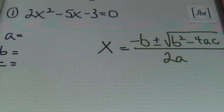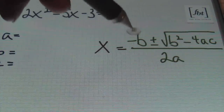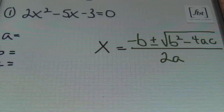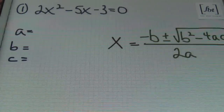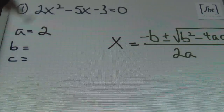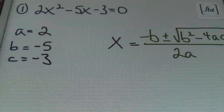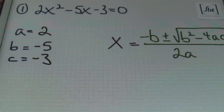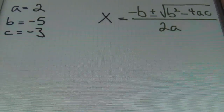Let's look at some examples. Problem number one is 2x squared minus 5x minus 3. Notice over here to the right I already have the quadratic formula written. Make sure you're writing it down every time — that helps you memorize it. So for the a value I have 2, for the b value negative 5, and for the c value negative 3.